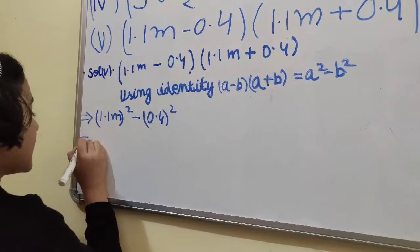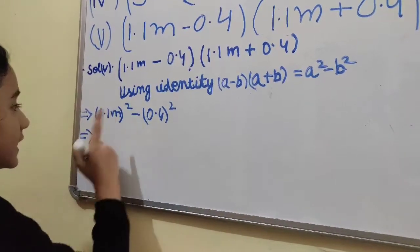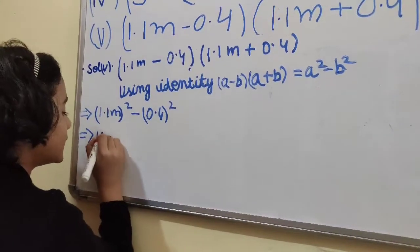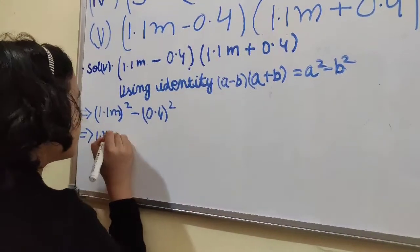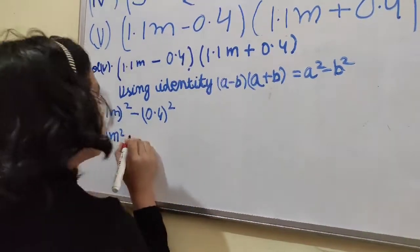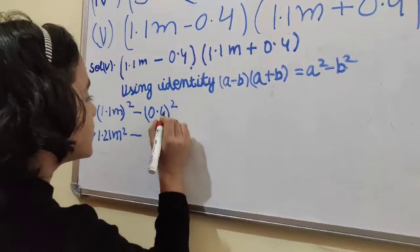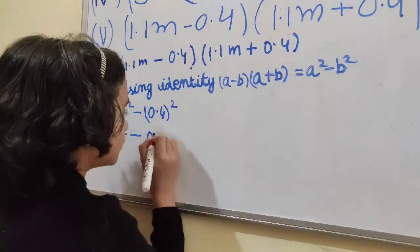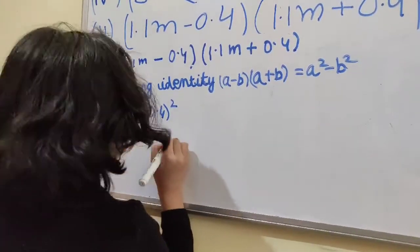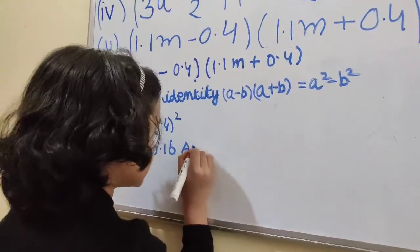Which implies (1.1)² is 1.21m² minus (0.4)² is 0.16. This is our answer.